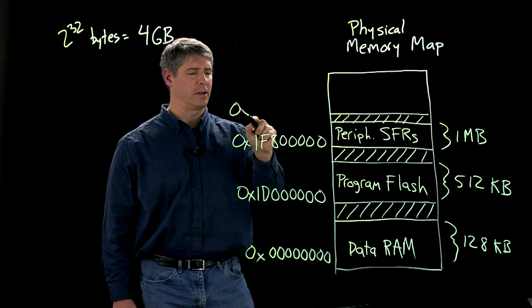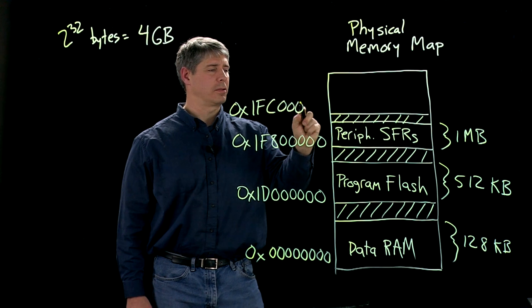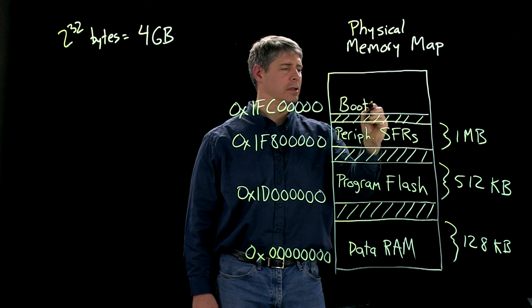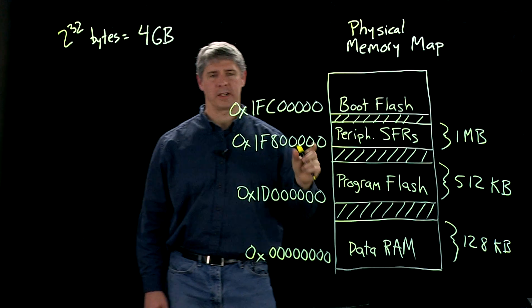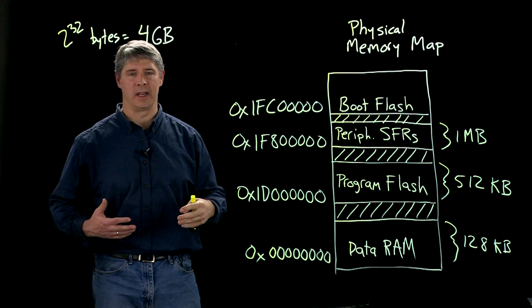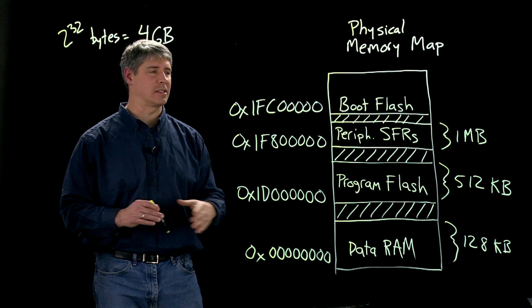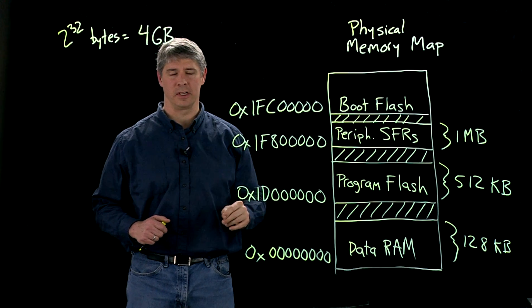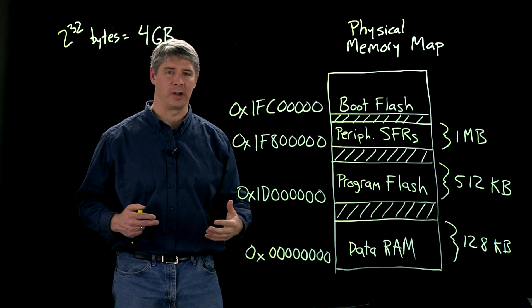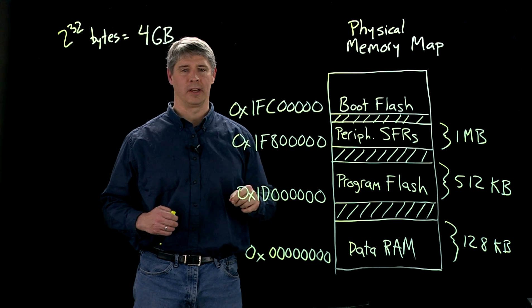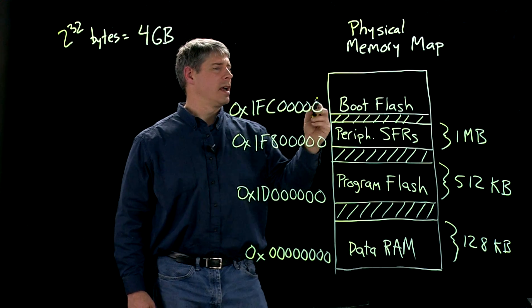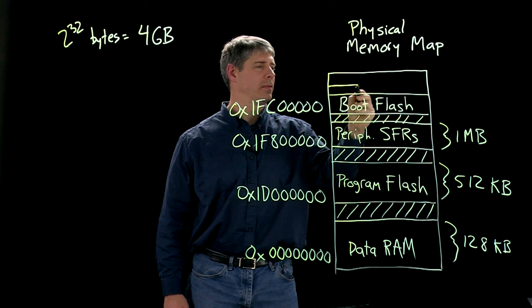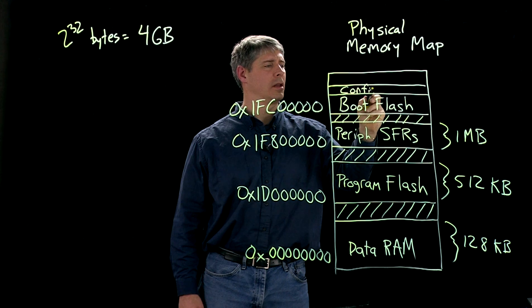Starting at address 0x1FC00000, we have what's called the boot flash. The boot flash is a region of memory to hold any startup commands for your program. When the PIC is reset, it's going to jump to an address in boot flash and start executing commands there, and then later it might jump out to somewhere else in program flash. The last four 32-bit words of boot flash are called the configuration bits.